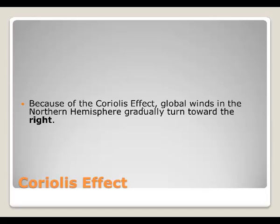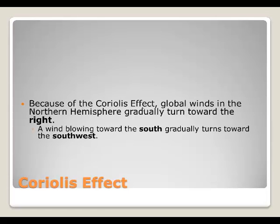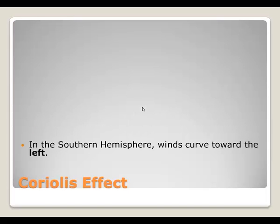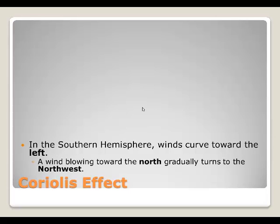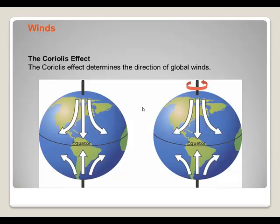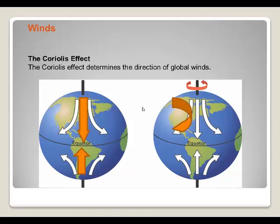Because of the Coriolis effect, global winds in the northern hemisphere gradually turn toward the right, so a wind blowing toward the south gradually turns toward the southwest. In the southern hemisphere, winds curve toward the left, so a wind blowing toward the north gradually turns to the northwest. Without the Coriolis effect, winds would sink from the poles and flow straight back to the equator to be reheated. With the Coriolis effect, winds flowing from north to south are deflected to the west, and winds from the south pole toward the north are deflected to the left.